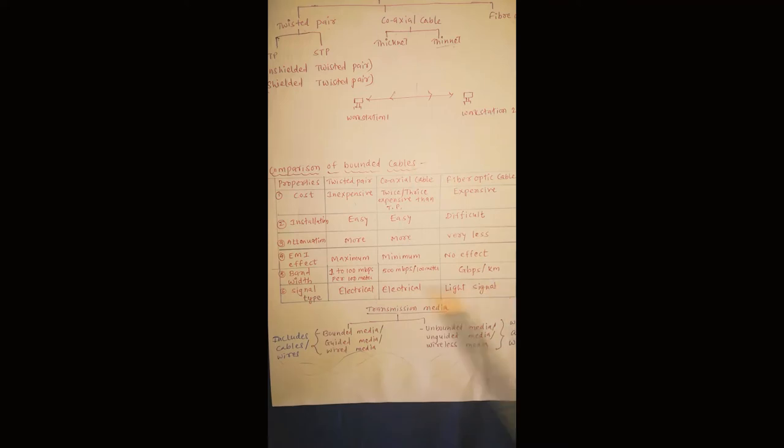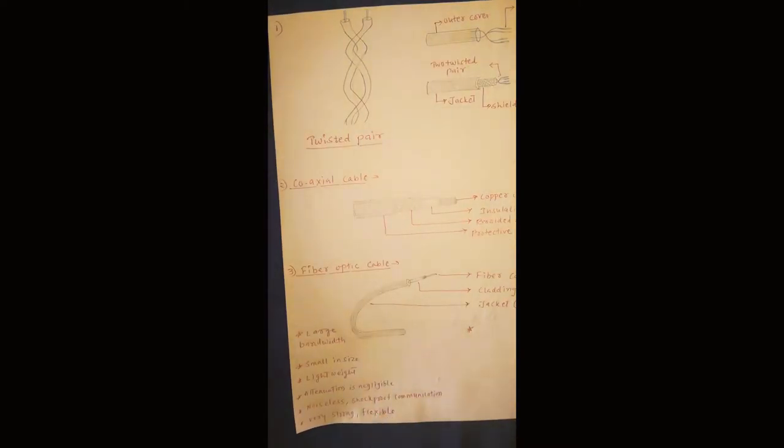So that is at a glance — a bird's eye view comparison of bounded cables. Now we will study each of these three cables one by one. The very first is twisted pair. Here is an example of one type of twisted pair. These are copper cables with a simple covering — this is a UTP type of cable — and the wires come out at the end. This is an example of twisted pair.